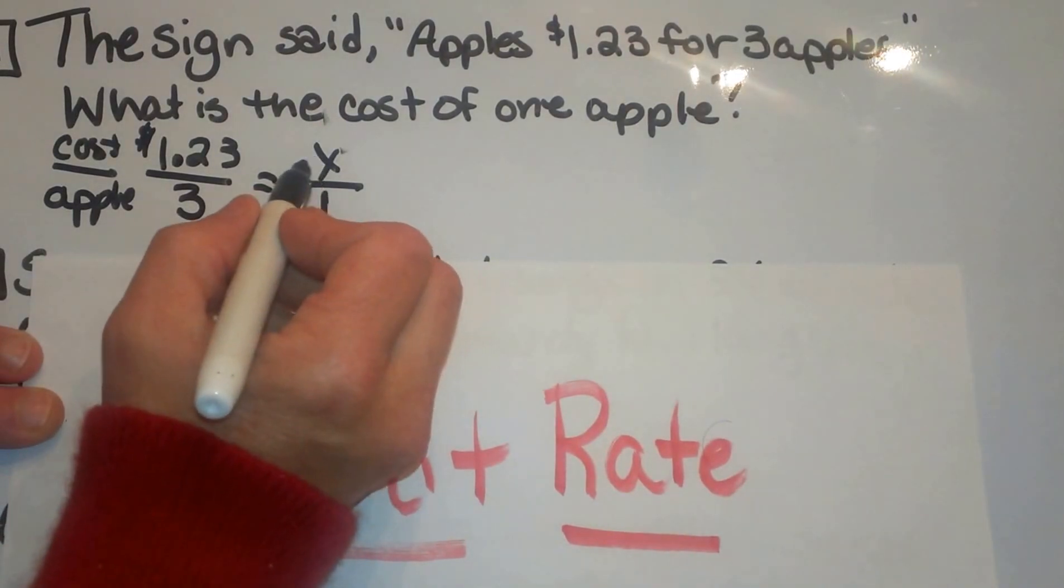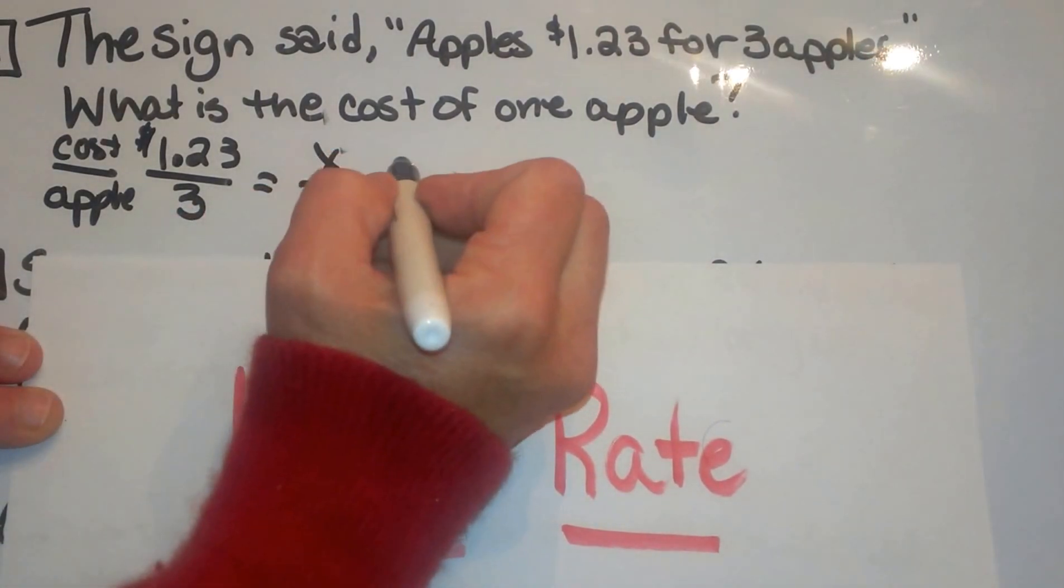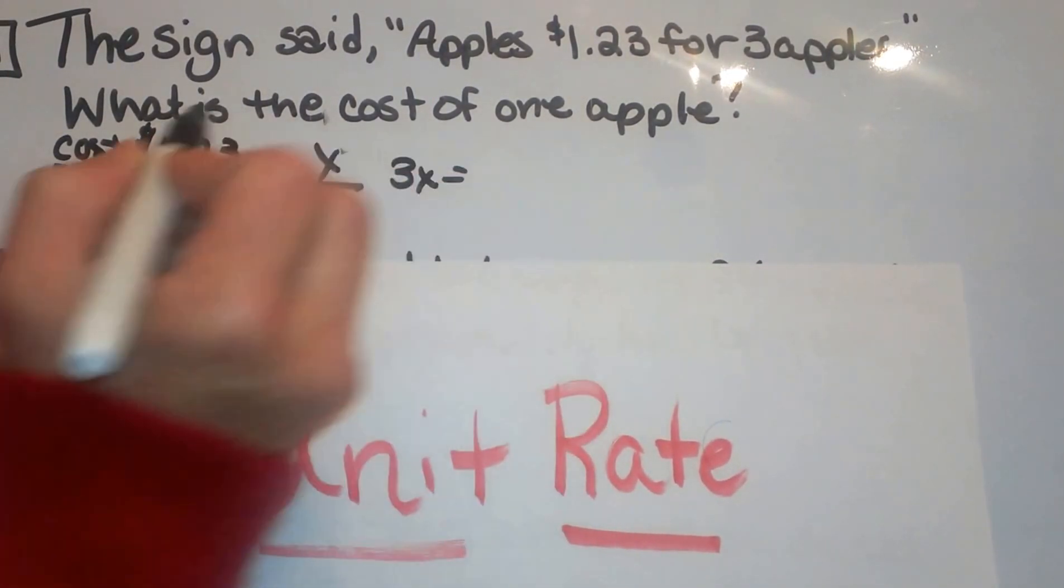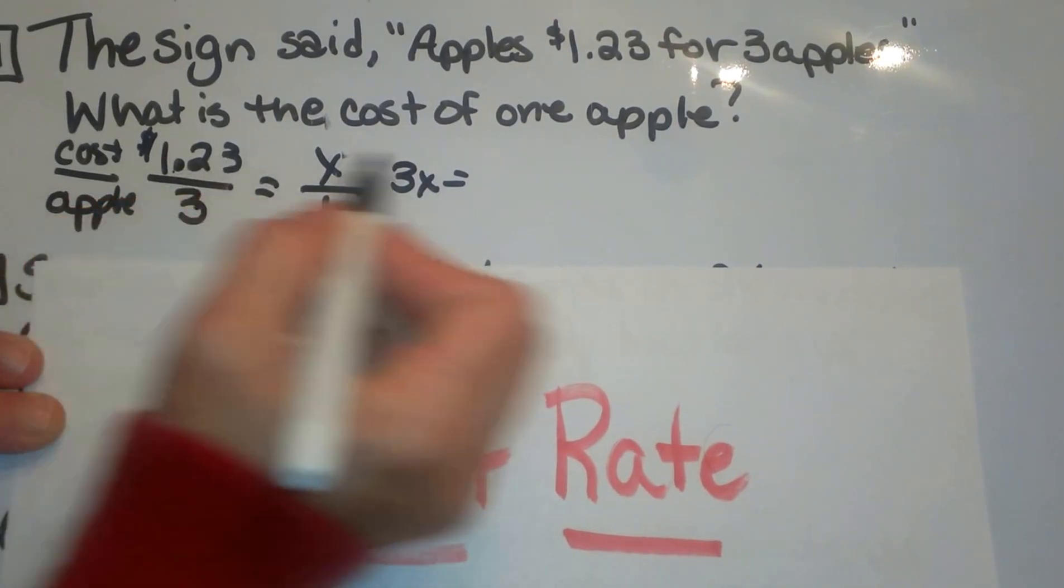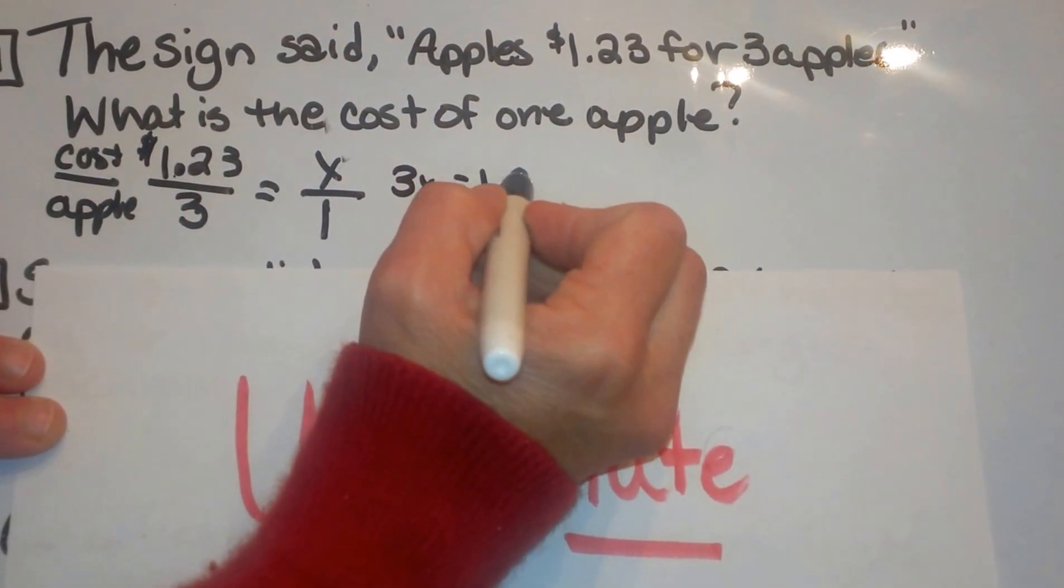Then we just cross multiply. Three times x is 3x and 123 times one is $1.23 or 123.